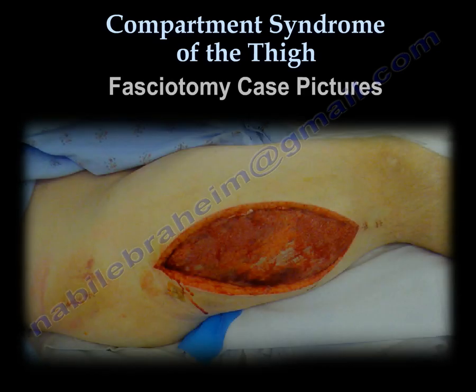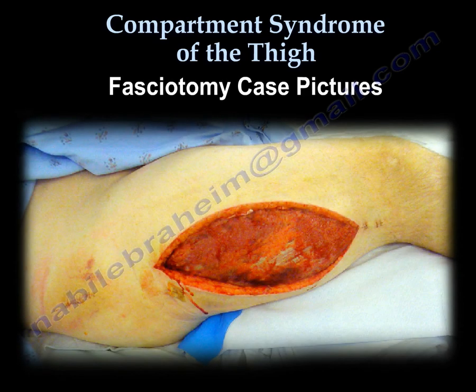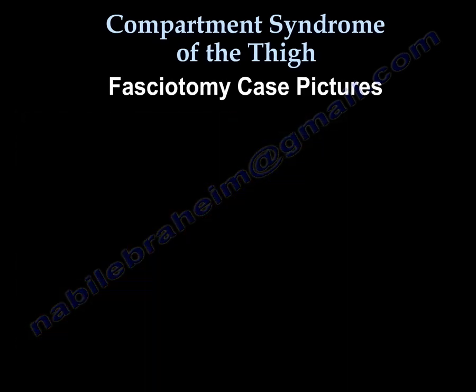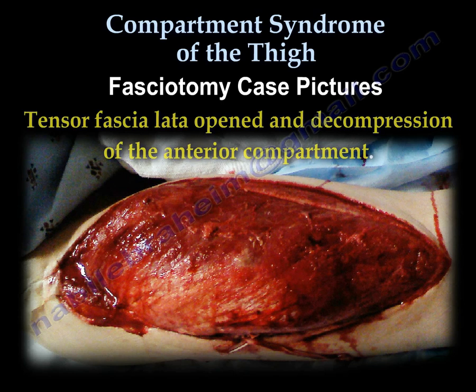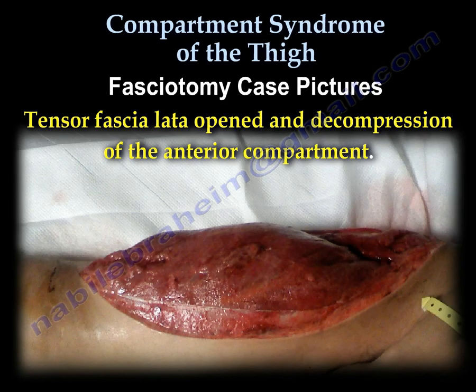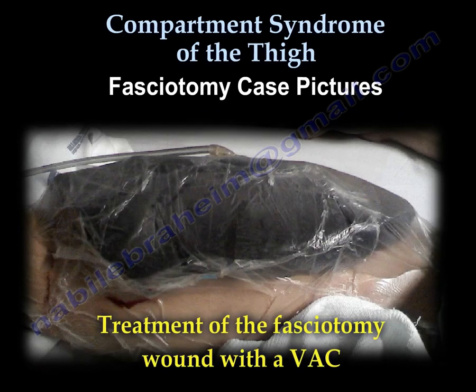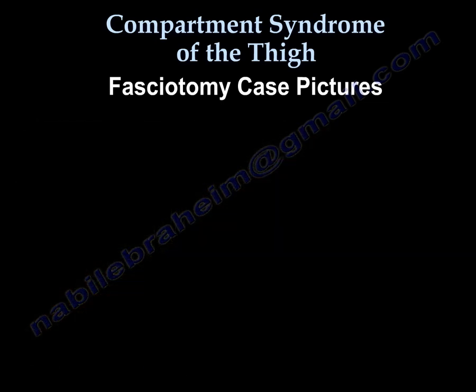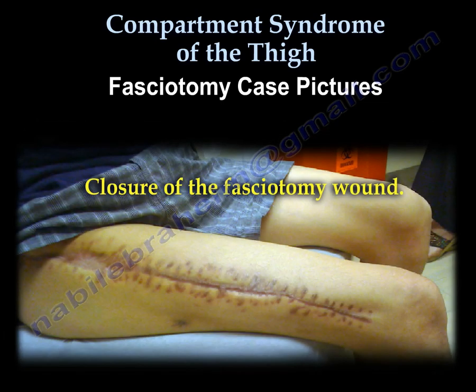This is an example of fasciotomy of the thigh. Notice that the tensor fascia latae is opened and the anterior compartment muscles are bulging through the incision. Here, the VAC is used to treat the wound after fasciotomy is done. Here is an example of closure of the fasciotomy wound.